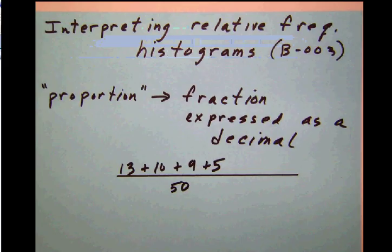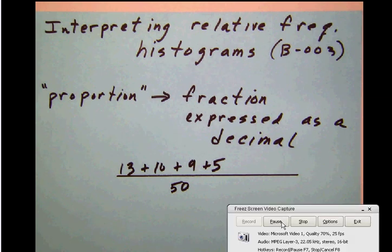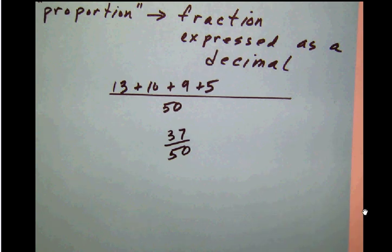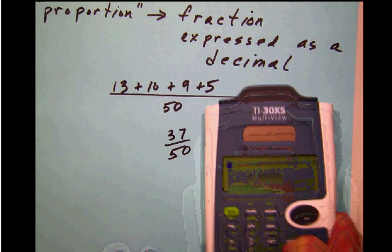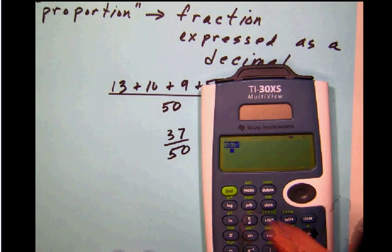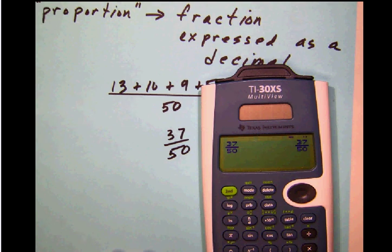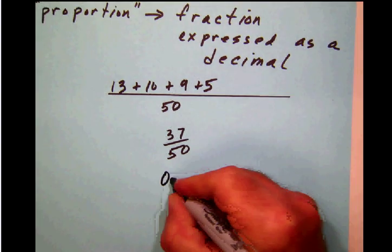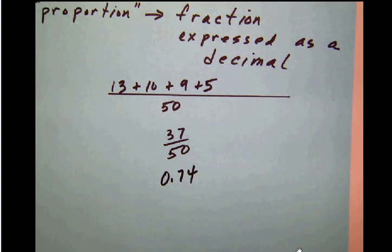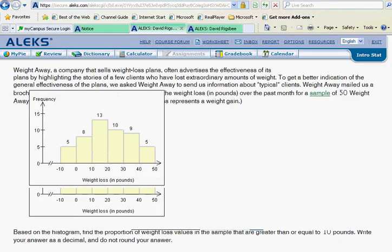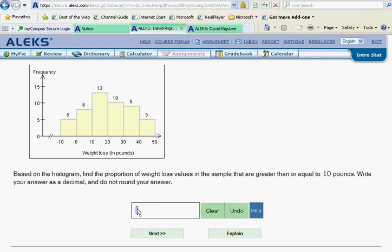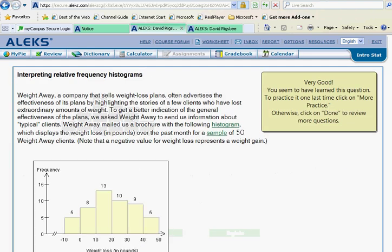Basically, they want us to add up those numbers and make that a fraction over 50, then convert that into a decimal. Doing that, we have 37 divided by 50. Grabbing a calculator and taking 37 over 50 and converting that to a decimal, we get 0.74. They say do not round it, so we simply put in 0.74 exactly as we got it, and check it.